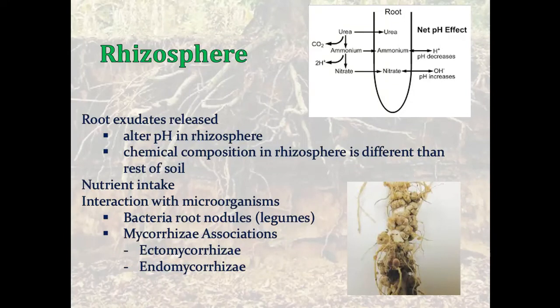The root exudates released alter the pH as well as the chemical composition, and this is mostly done in efforts of the plant to take in nutrients. Then there's this interaction with microorganisms. This is where we get our root nodules on legumes, and the ectomycorrhizae and endomycorrhizae. Ectomycorrhizae colonize just on the outside of the root and form that symbiosis. Endomycorrhizae will actually penetrate into the plant root and interact that way.